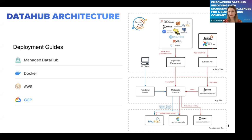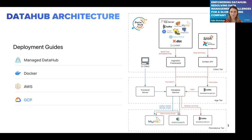Looking at the DataHub architecture: under the hood it uses Kafka, Elasticsearch, and MySQL, and uses a REST API to connect everything. The good news is DataHub has prepared everything for you — you can use a Docker container where all these services are pre-built and installed. For growing projects, there are guides to install DataHub on AWS, GCP, and Azure. It has pretty good documentation and a support chat on Slack where questions get answered.